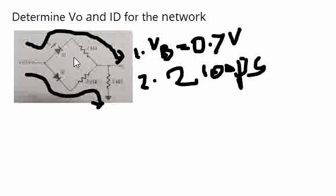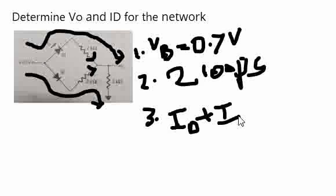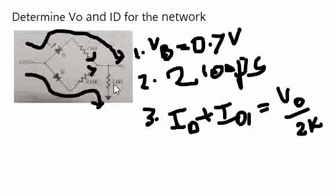And the third thing that we have to consider is, if the current is ID as mentioned here, if we take this as ID1, ID plus ID1 is equal to V0 by 2K. That means V0 by R, which is nothing but the current passing through this. If we consider as I of 2K, the current passing through this is nothing but ID plus ID1.